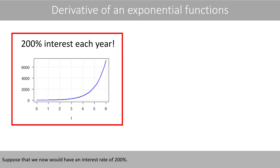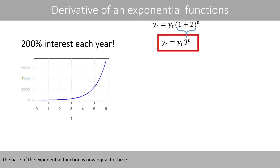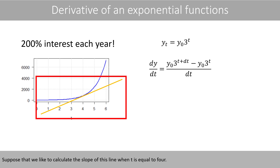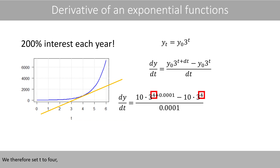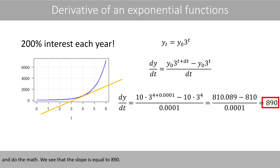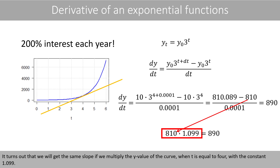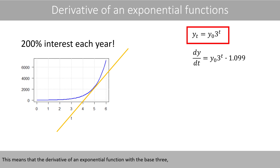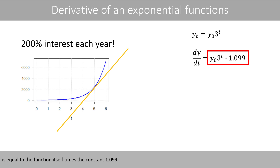Suppose that we now would have an interest rate of 200%. The base of the exponential function is now equal to 3. We can use the same equation as before to estimate the slope at a certain point on the curve. Suppose that we like to calculate the slope of this line when T is equal to 4. We see that the slope is equal to 890. It turns out that we will get the same slope if we multiply the y-value of the curve when T is equal to 4 with the constant 1.099. The derivative of an exponential function with the base 3 is therefore equal to the function itself times the constant 1.099.